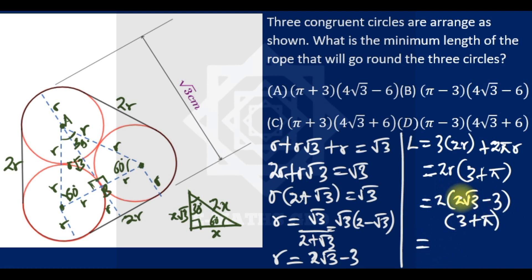So this is equal to the total length of the rope. Which is option... I think option A. The answer is option A. It is a very nice and tricky question. Thank you.